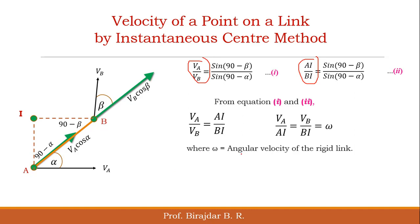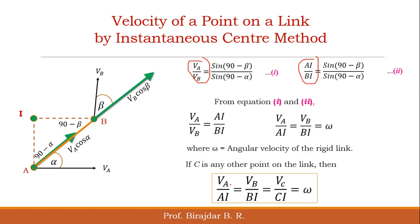Here omega is the angular velocity of the link. If another point C is also on this link, we can similarly extend the relation: VA/AI equals VB/BI equals VC/CI, and all equal omega.